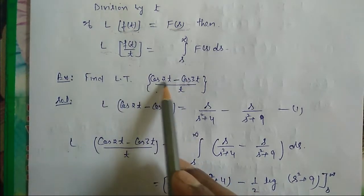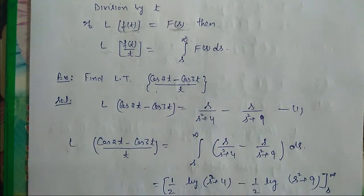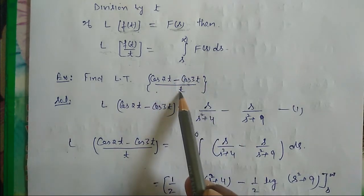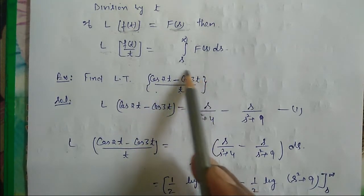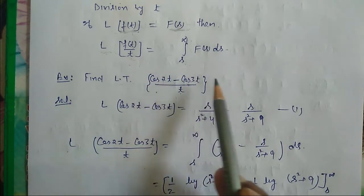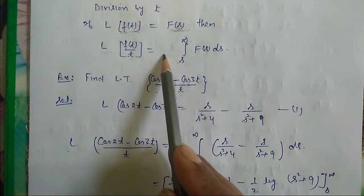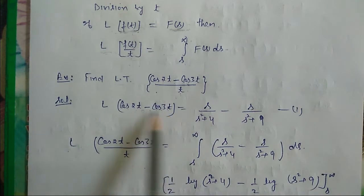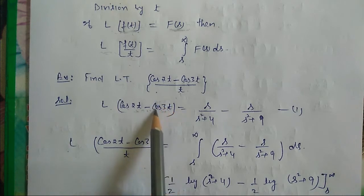Let us see the example here — an important question: the Laplace transformation of (cos2t − cos3t) divided by t. Whenever such a question comes, first note which method is being used. We drop the t and find the Laplace transformation of the remaining part, then integrate by this rule. So the Laplace transformation of cos2t − cos3t, according to the linearity property, equals L{cos2t} minus L{cos3t}.